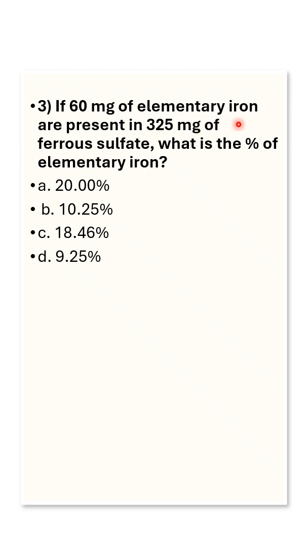If 60 mg of elemental iron are present in 325 mg of ferrous sulfate, what is the percentage of elemental iron?